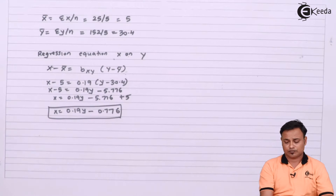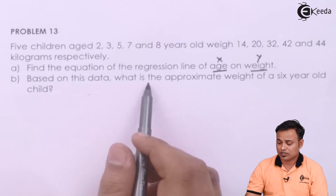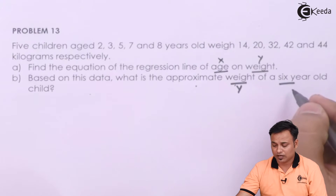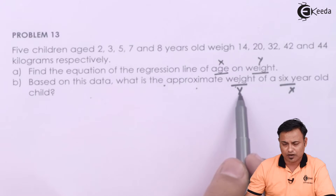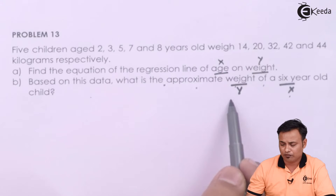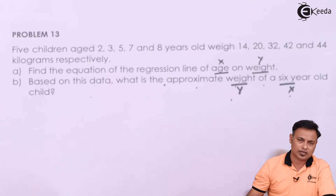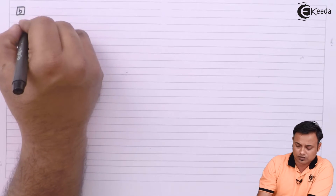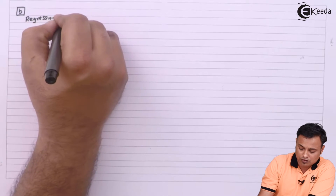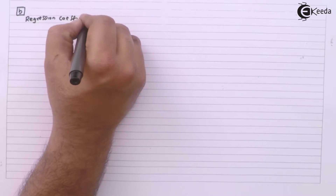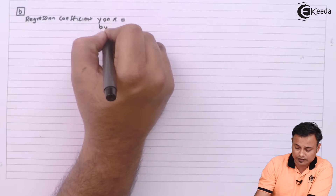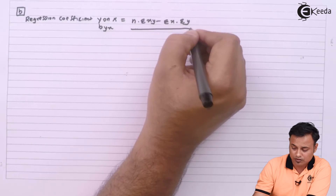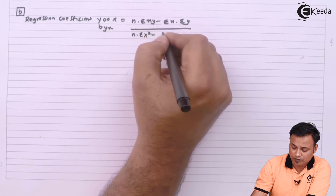Now for part b, they have asked us to find the weight — that is y — of a six-year-old child, where six years is the age x. So we actually need the regression line y on x rather than x on y. For part b, I will find the regression coefficient b_yx. The formula is: b_yx = (n×Σxy − Σx×Σy) ÷ (n×Σx² − (Σx)²).